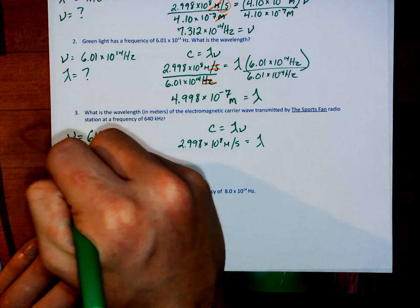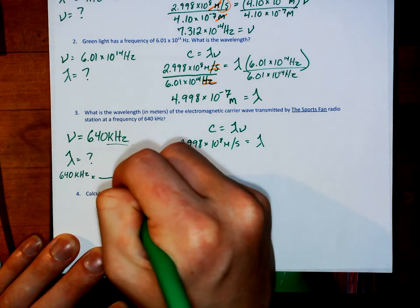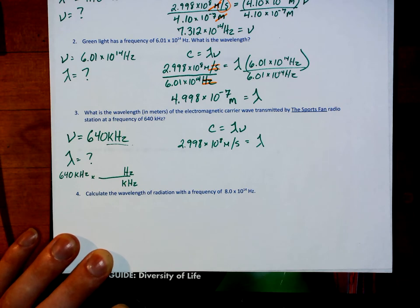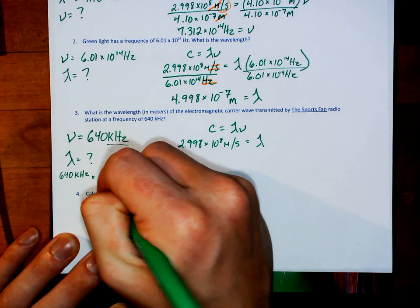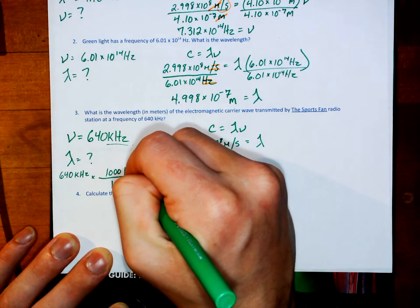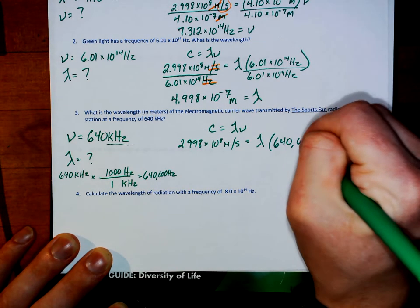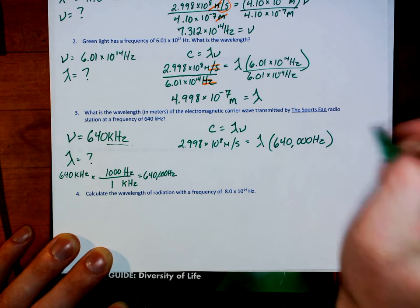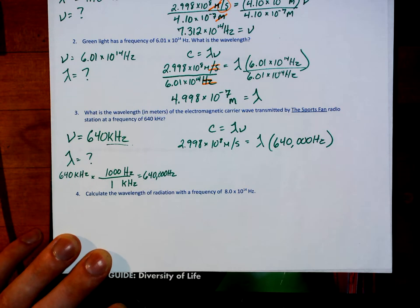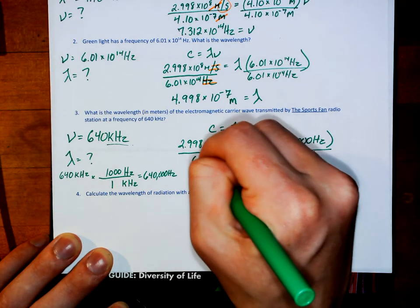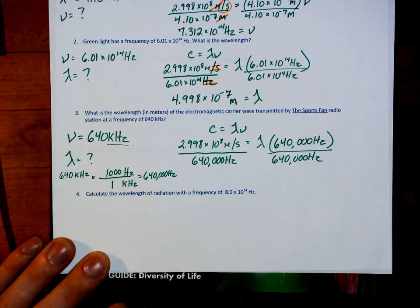640 kilohertz multiplied by a conversion fraction with kilohertz on the bottom and hertz on top. Kilo always means a thousand — there are a thousand hertz in a kilohertz — meaning my frequency is going to come out to be 640,000 hertz. That is what I am going to plug in, because in order for the per second to cross out, I need this to be in hertz. The math would not work if it was in kilohertz. So I divide by that frequency on both sides, causing it to cross out on the right.